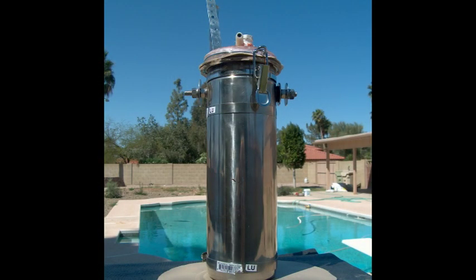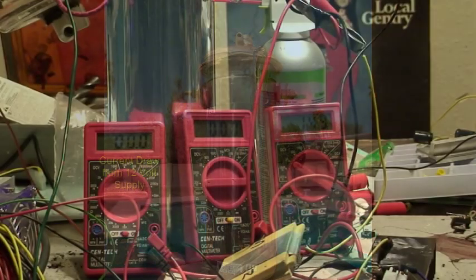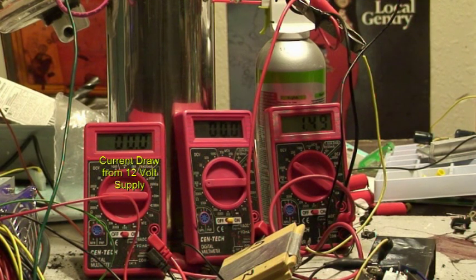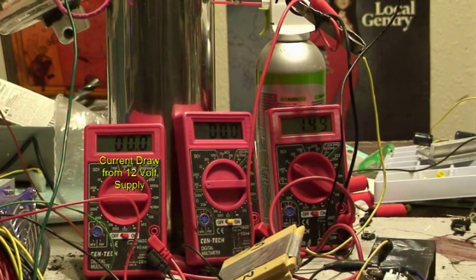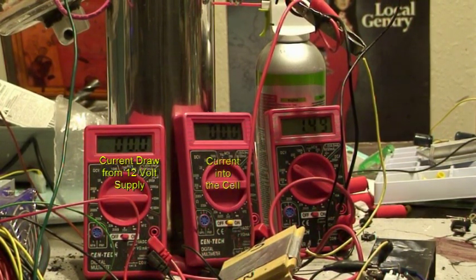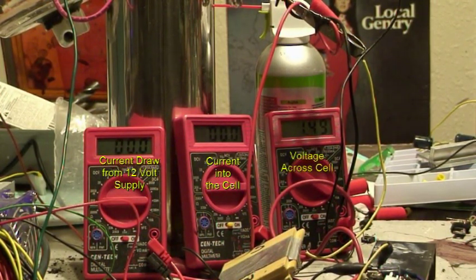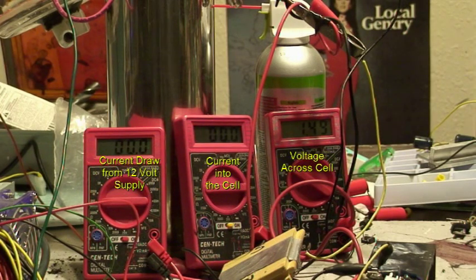What you're seeing on meters is the first one is current from the 12 volt source, the second one is the current being drawn by the cell, and the third is the voltage across the cell which will be about 2.14 somewhere in that area.